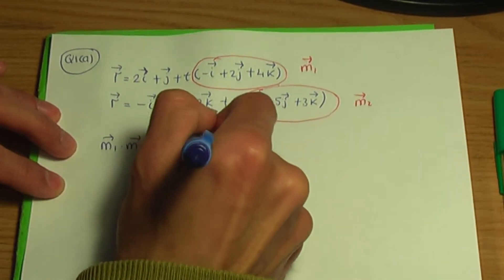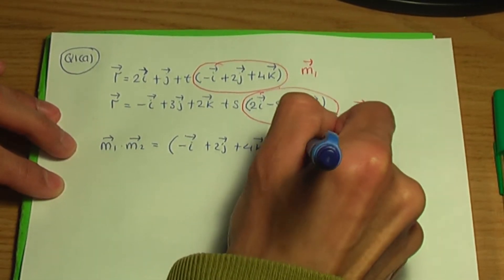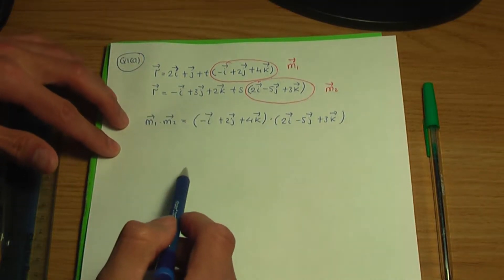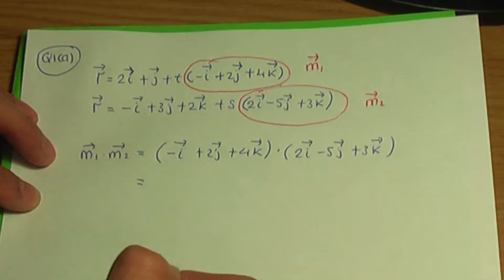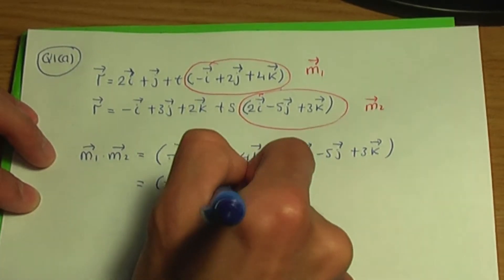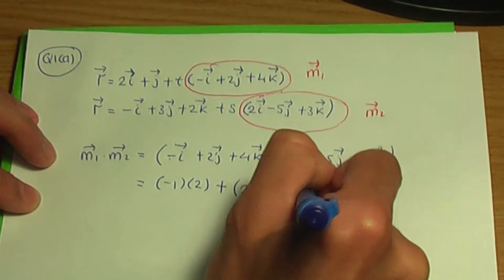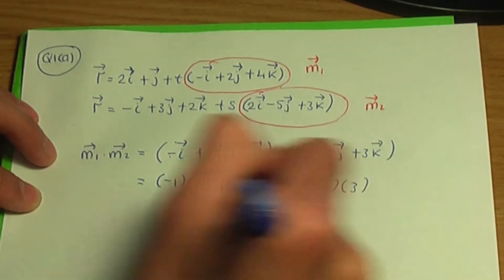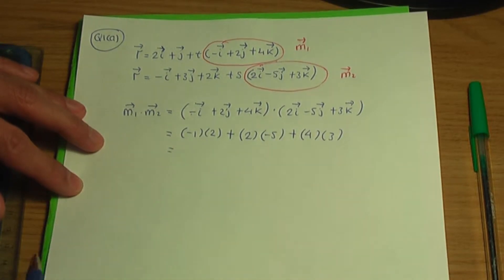So m1 is -i + 2j + 4k, and we dot that with m2 which is 2i - 5j + 3k. To work out the scalar or dot product, all we do is multiply the coefficients of i, j, and k and then add. So multiply the coefficients of i: (-1)(2); then multiply the coefficients of j: (2)(-5); then multiply the coefficients of k: (4)(3).